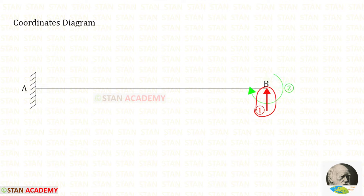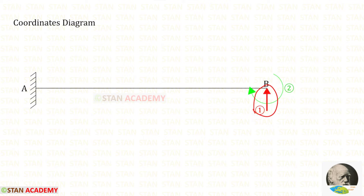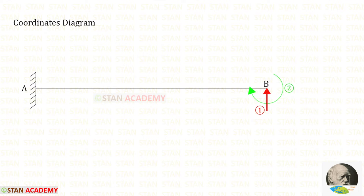In this analysis there are two coordinates: the vertical reaction RB and the moment MB, which we are keeping as coordinates because we have removed them. Let us keep RB as the first coordinate, directed upwards, and MB as the second coordinate in the clockwise direction. If we get any negative value, we can change the directions.